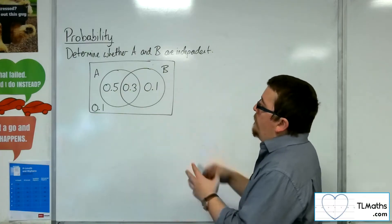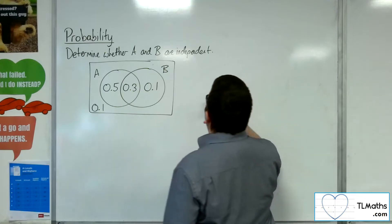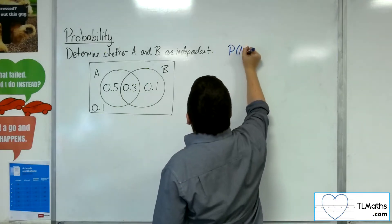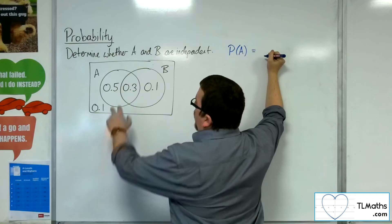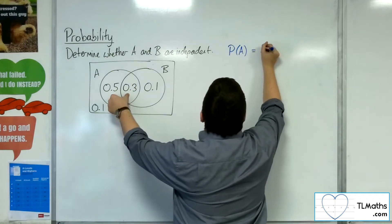So from this Venn diagram, I can read off the probability of A as being 0.5 plus 0.3, so 0.8.